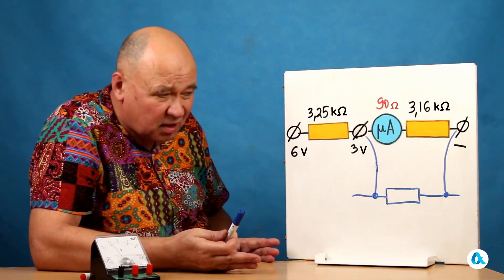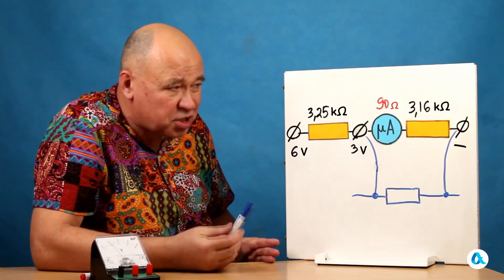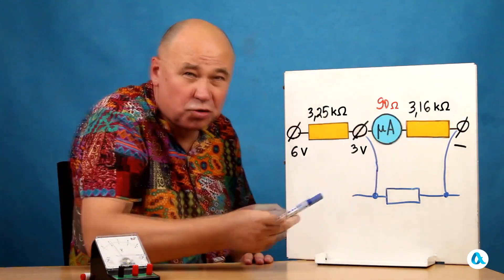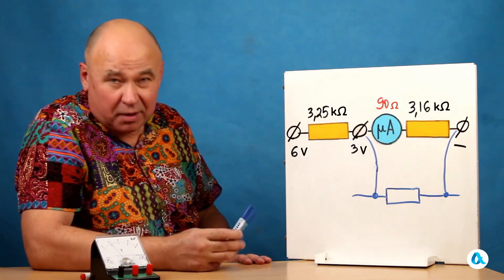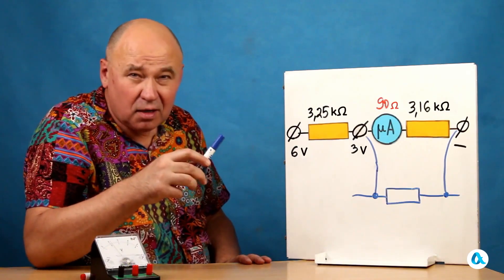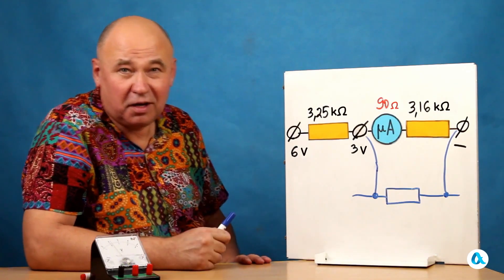And accordingly, with a voltage of 6 volts, I will still get a current of 1 milliampere. And the needle will deflect to its maximum angle.